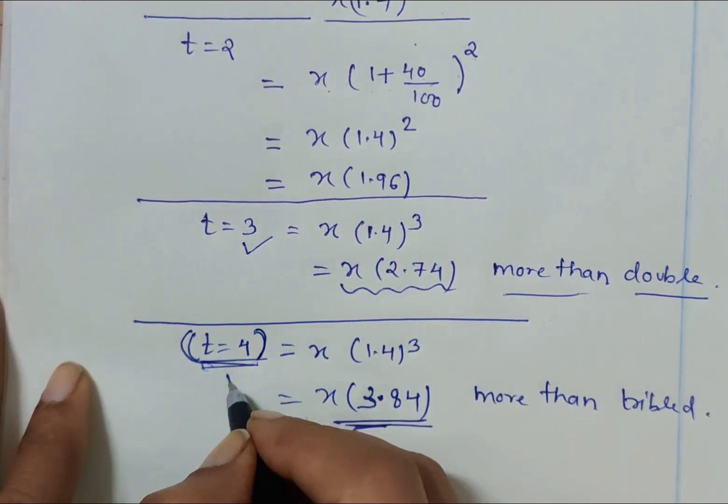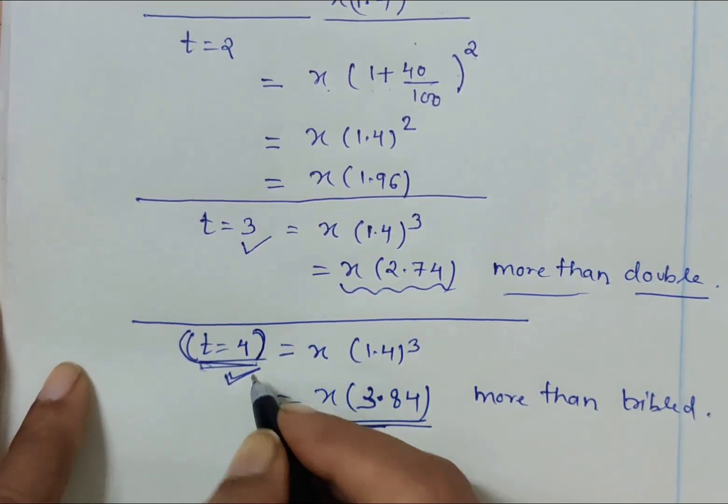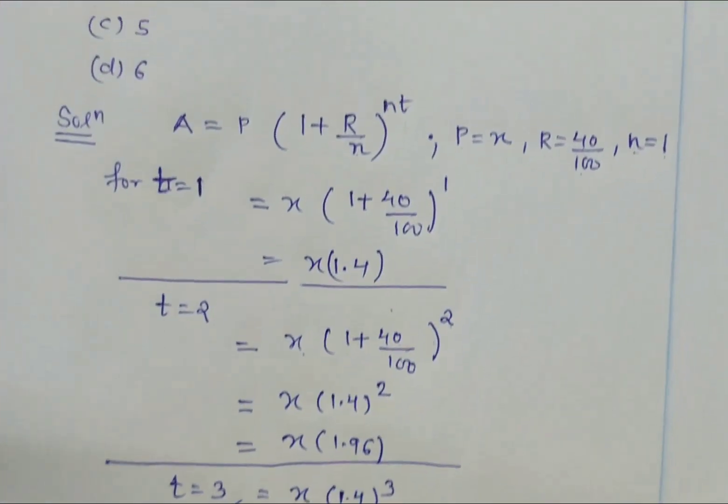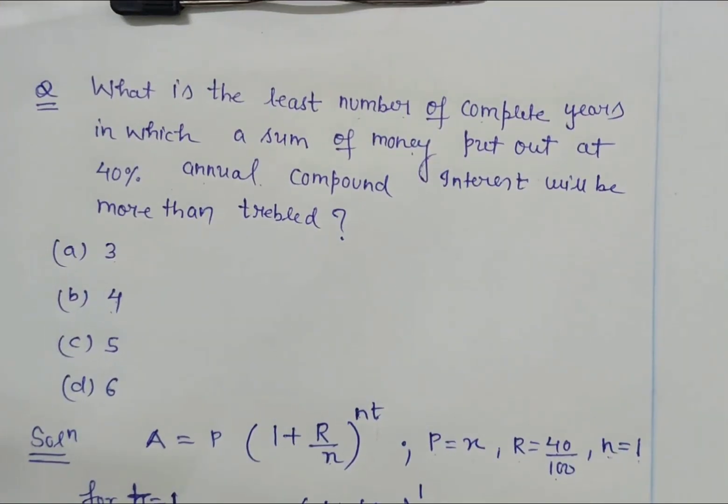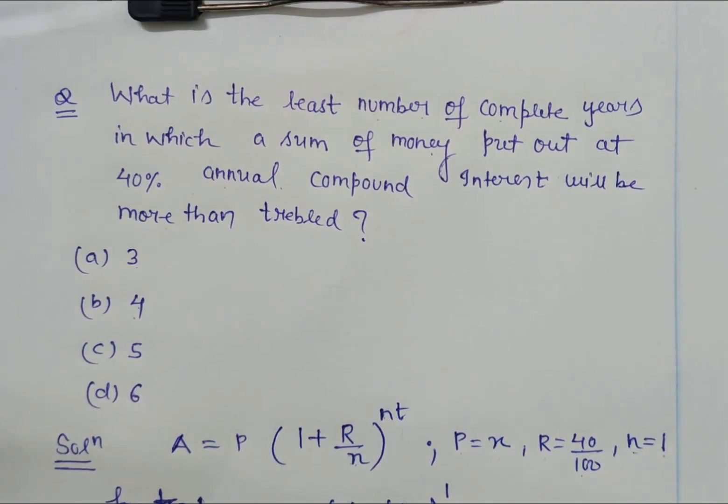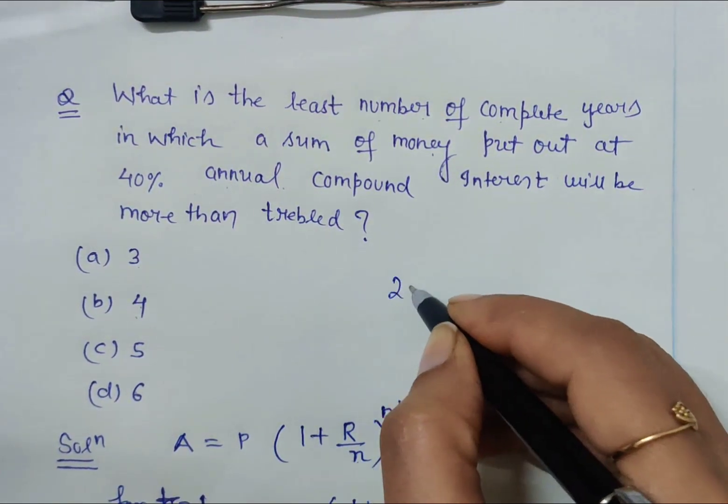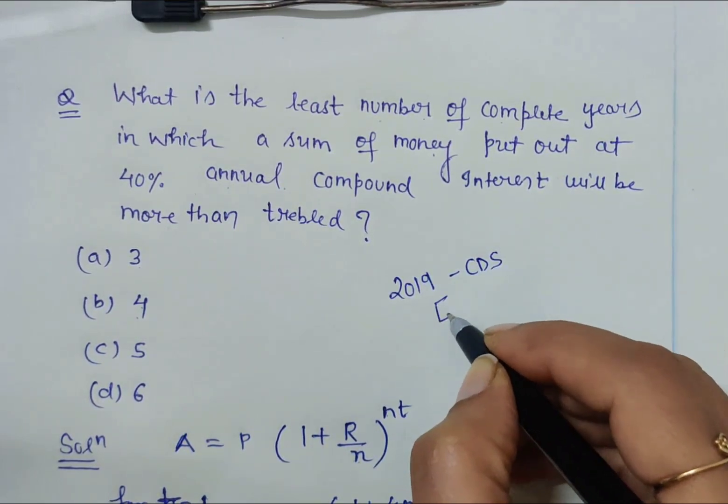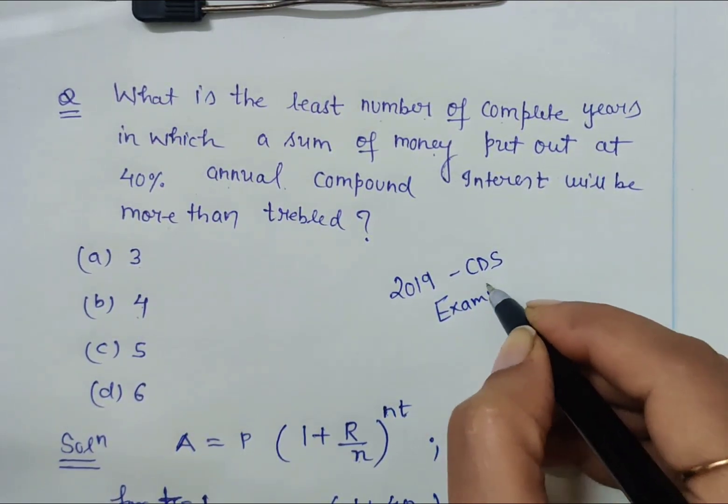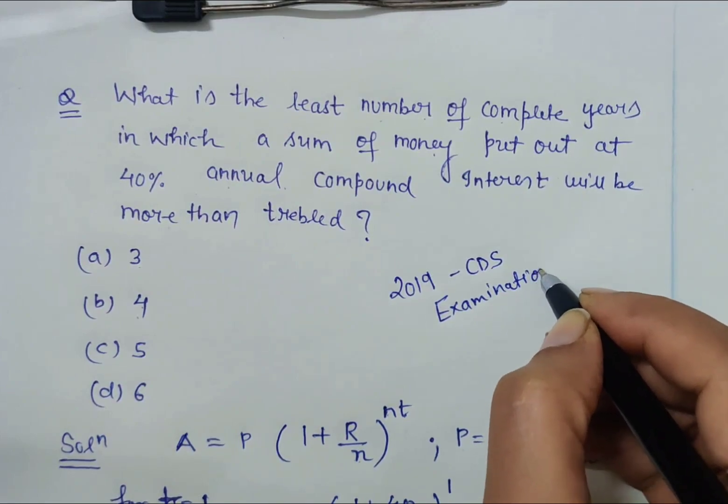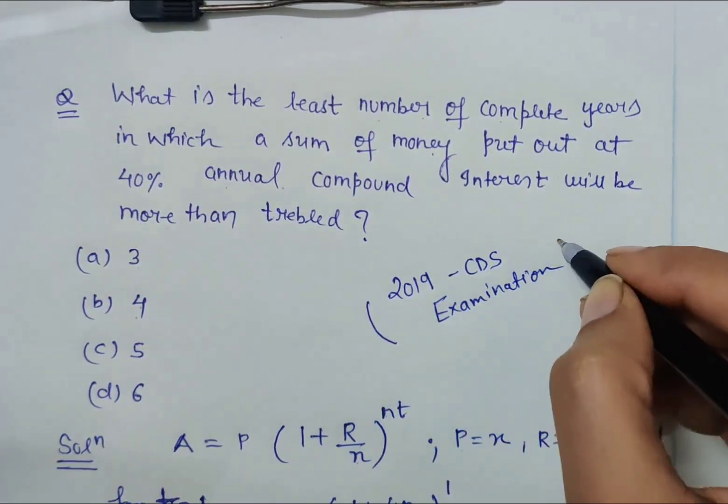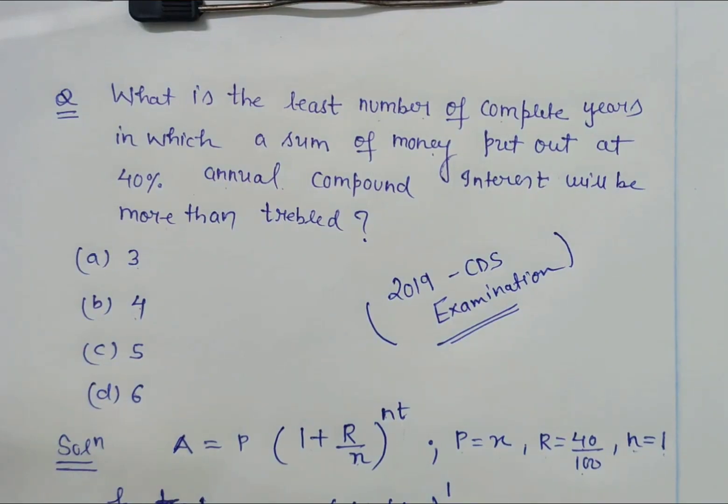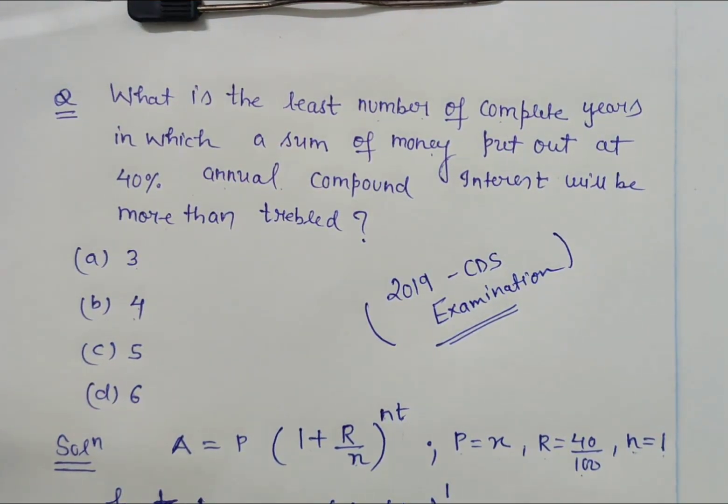The value of the complete year is 4. This is the solution for this question, a very good question which was asked in the year 2019 CDS examination. If you have doubt in any other problem, you can ask me in the comment box and soon a solution will be provided to you. Thank you.